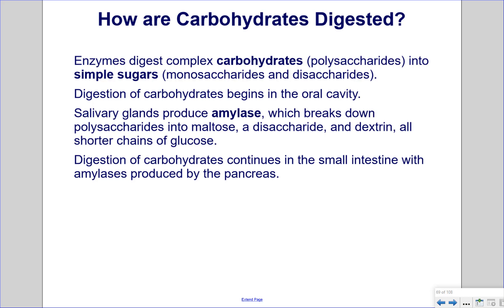Salivary glands produce amylase, which breaks down polysaccharides into maltose, a disaccharide, and dextrin — all shorter chains of glucose. Digestion of carbohydrates continues in the small intestine with amylases produced by the pancreas.